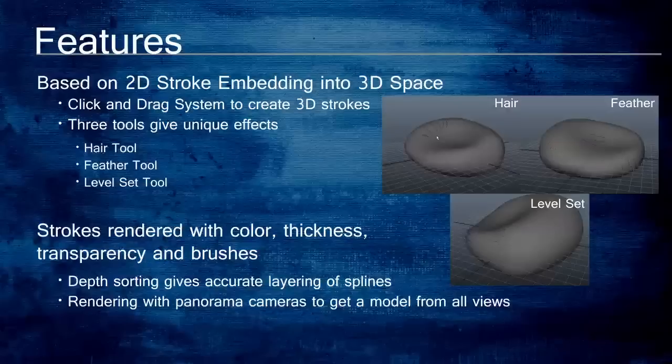After the artist finishes drawing, they can choose different sizes and names from the Maya rendering settings. Then they can either click the regular render button to obtain a rendered image from the current camera view, or they can click the batch rendering button to obtain a series of rendered images from a panoramic camera.